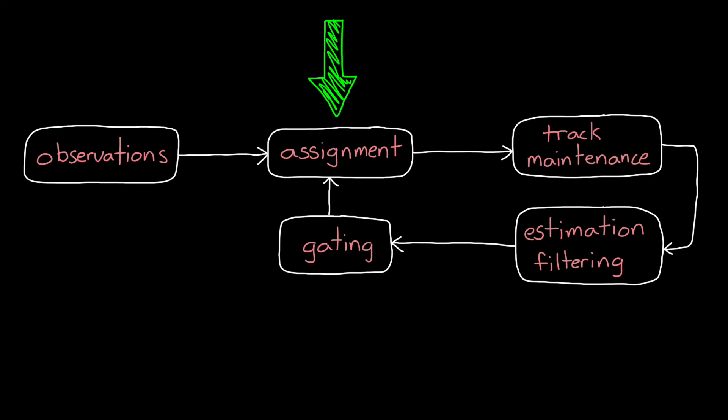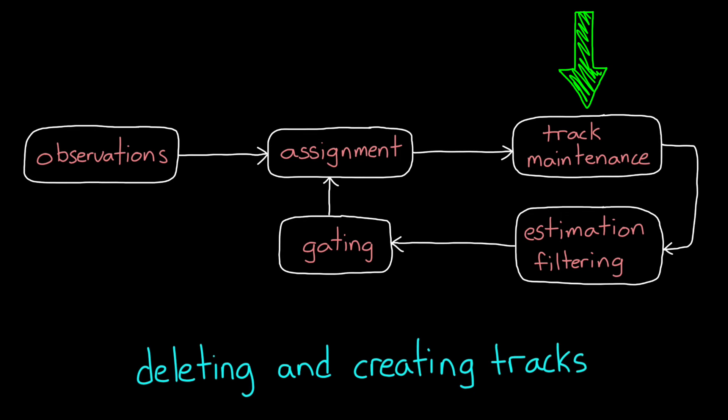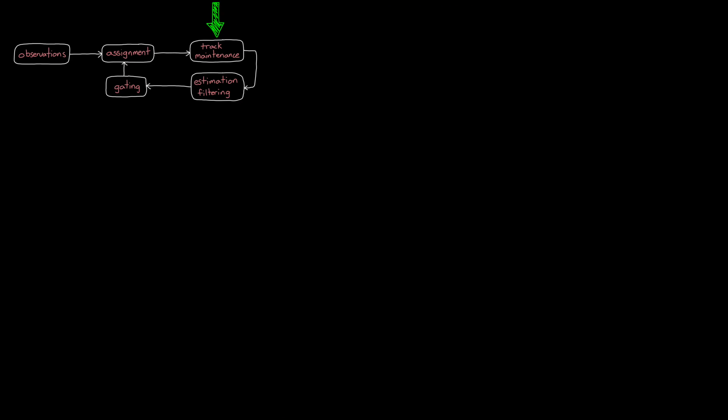Not all observations get assigned, and not all tracks have observations. This is where track maintenance comes in, in the form of deleting and creating tracks. But as I said before, we have to be careful so we don't do anything prematurely. So let's start with one way to delete tracks in a conservative way.